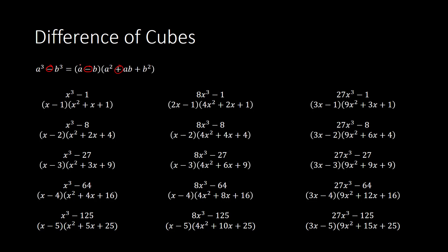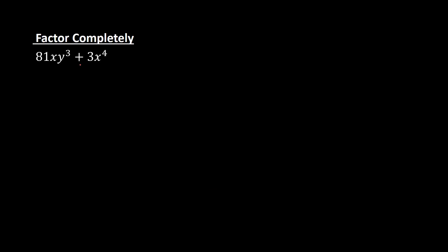Now that you have a good grasp on factoring a sum and difference of cubes, let's look at this next problem where you're told to factor completely. It doesn't look like anything we were just doing, but it will in a moment. When you factor something, the first thing you always want to do is see if there's anything the terms have in common that you can pull out. Looking at 81xy cubed and 3x to the fourth, the greatest common factor of 81 and 3 is 3, and they both have an x in common, so the GCF is 3x.